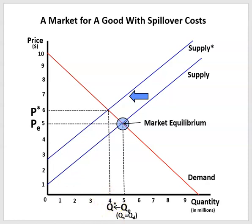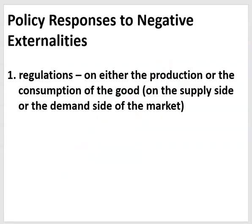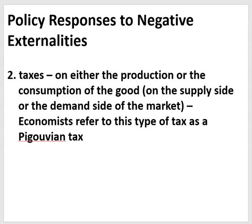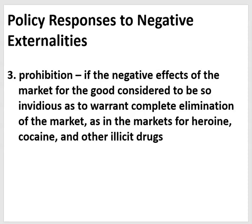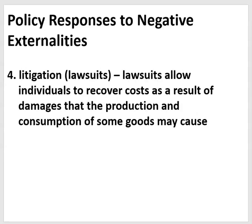Moving demand or supply curves on a graph is relatively easy, but how can government decrease demand or supply in real-world markets? Government has four policy options for decreasing the level of output of a good. Number one, by placing regulations on either the production or consumption of the good. Number two, by taxing the good — this is called a Pigouvian tax. Number three, by prohibiting the market for the good if the negative effects are considered invidious enough to warrant elimination of the market entirely, as in the markets for heroin, cocaine, and other illicit drugs. And four, through litigation or lawsuits that allow individuals to recover costs as a result of damages that the production and consumption of some goods may cause.